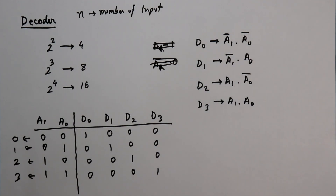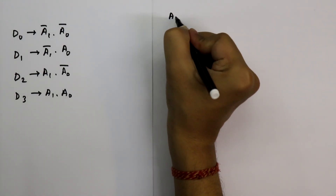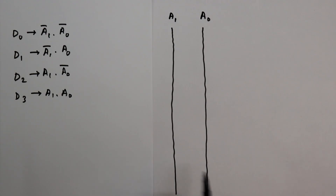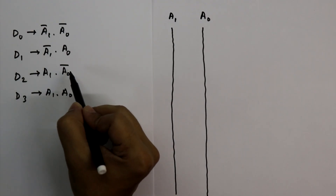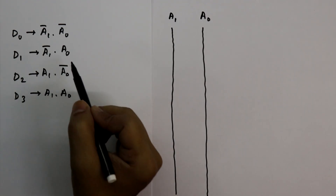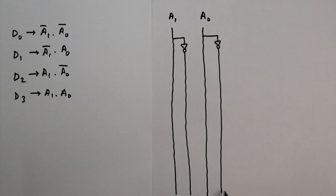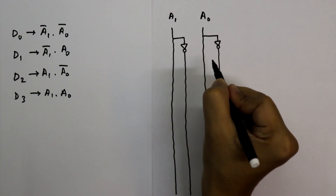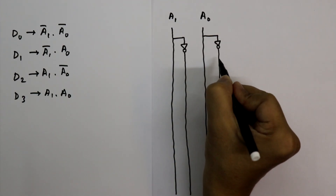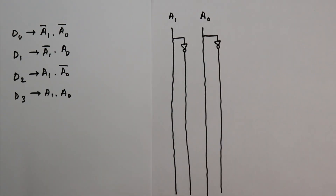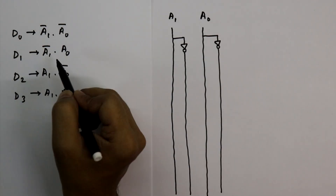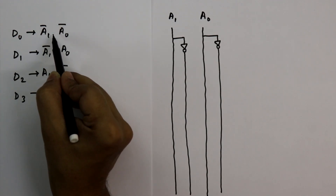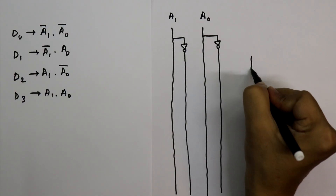We have two inputs, A1 and A0. We also need A1 complement and A0 complement, for which we have to use NOT gates. The A1 complement line and A1 line, and the A0 line and A0 complement line are produced by the NOT gates.